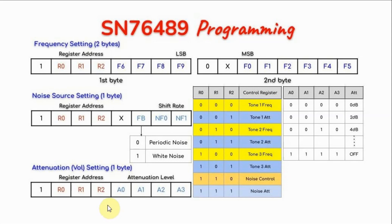Finally, to control the volume of the three tone channels and the noise channel, we send this byte here. These three bits here are the register address bits, and they determine whether we are controlling the volume of tone 1, or tone 2, or tone 3, or the noise channel.